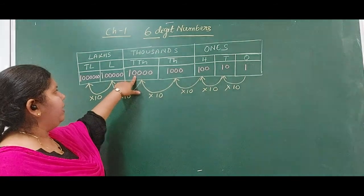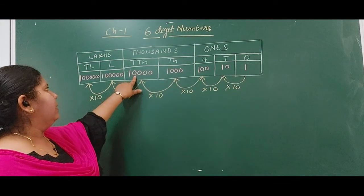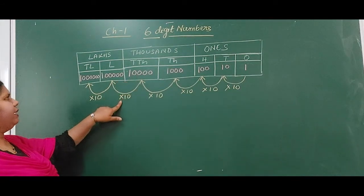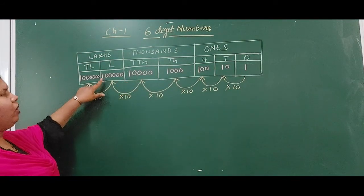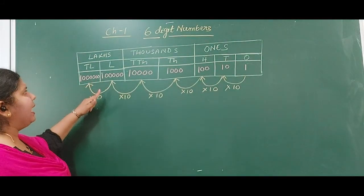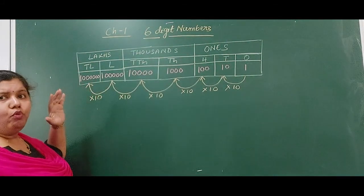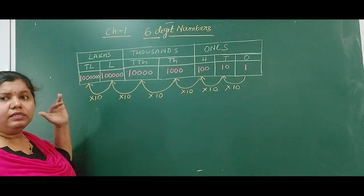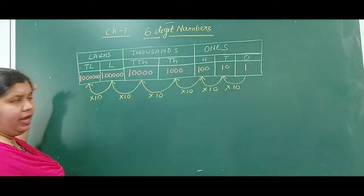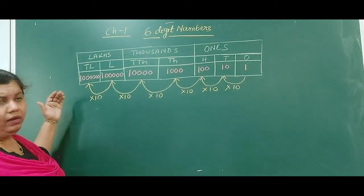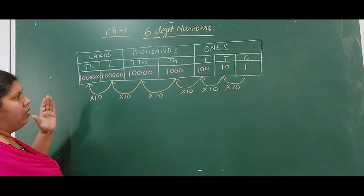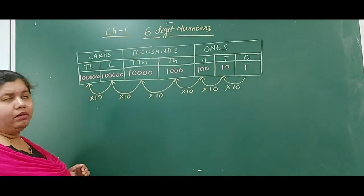1,000 multiplied by 10 will give you 10,000. So every time we move to the next place, we have to multiply by 10.